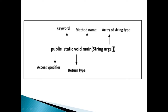Here you can see: public static void main(String args). Public is an access modifier, static is a keyword, void is a return type, main is the method name, String is the data type, and args is an array of String type. Let us see how we can explain each term in detail.